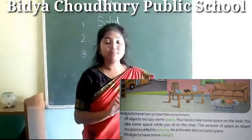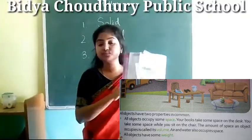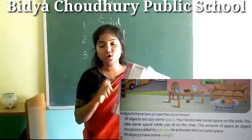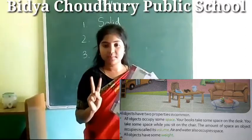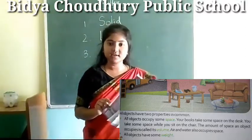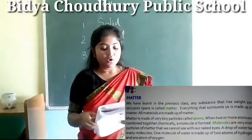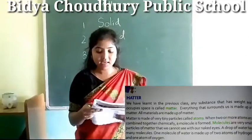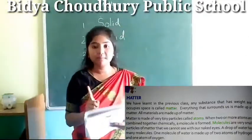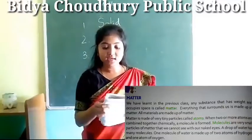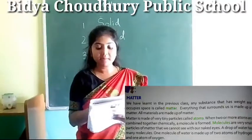Now, all objects have some weight. We know you have weight, I have weight, and this book also has weight. So these two — occupying space and having weight — are the common properties of all objects. Any substance that has weight and occupies space is called matter. The objects which have weight and occupy space are known as matter.